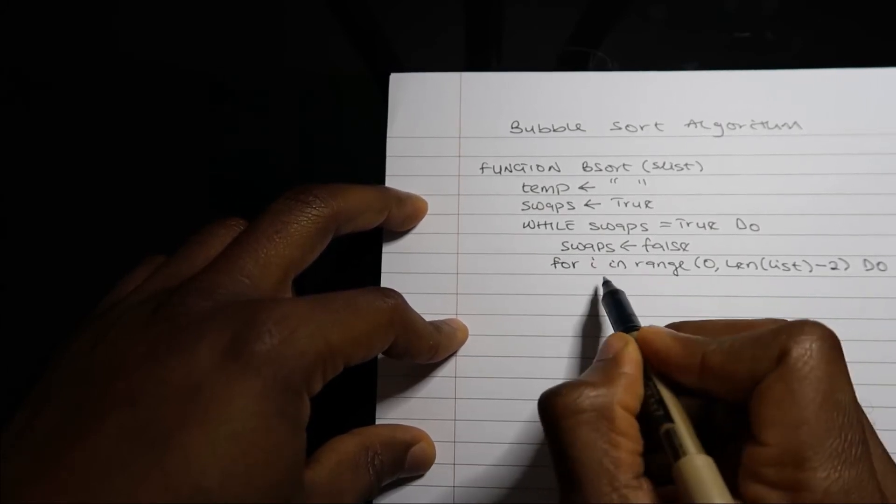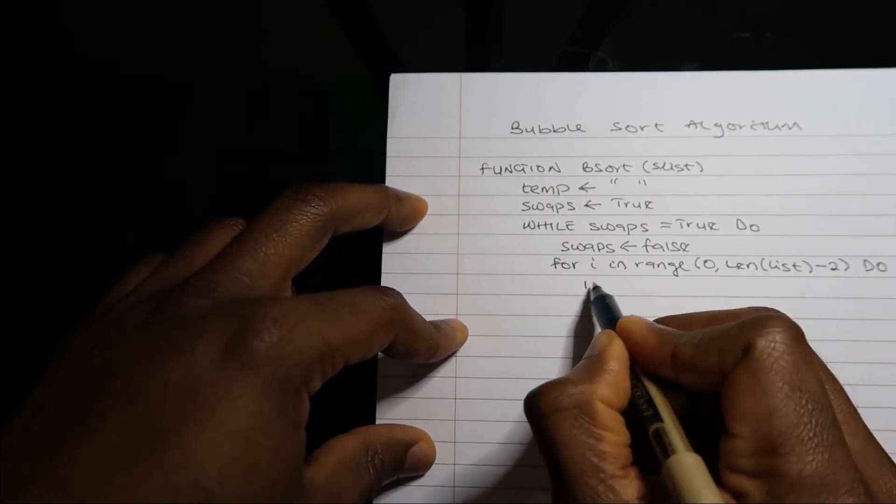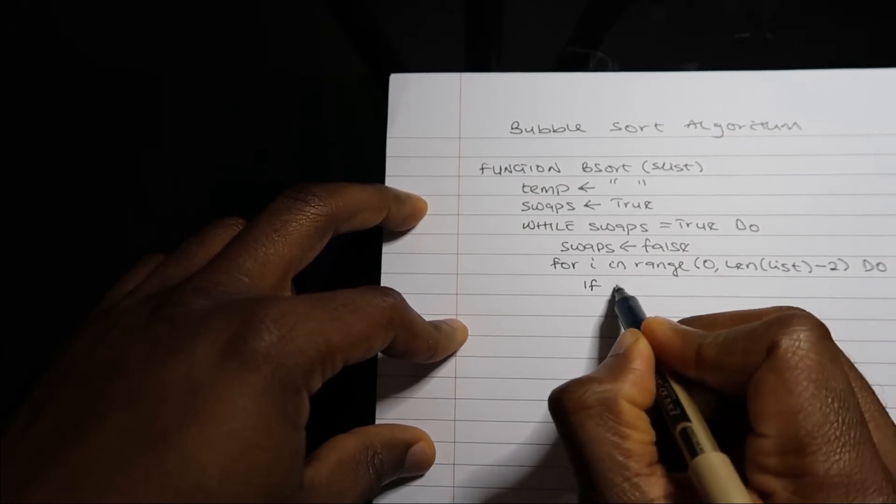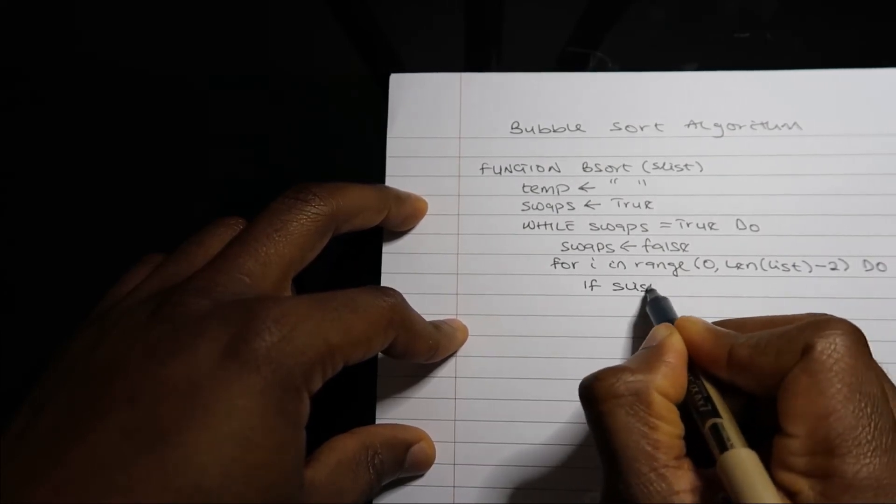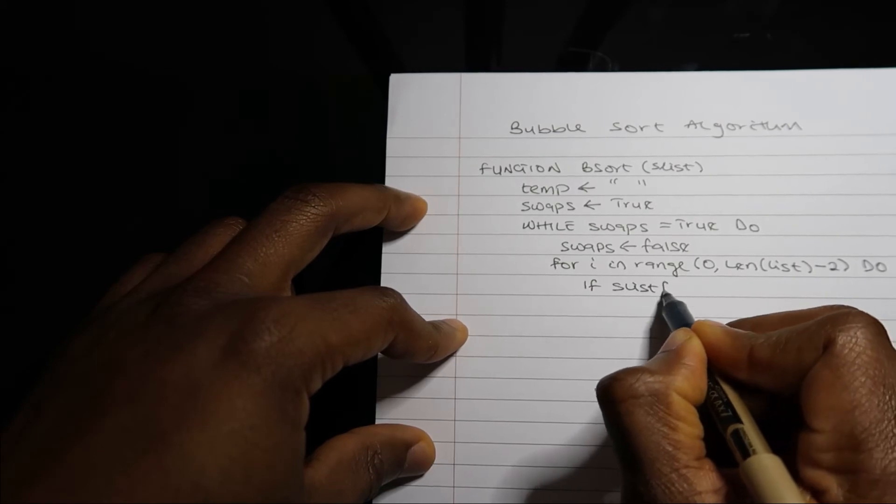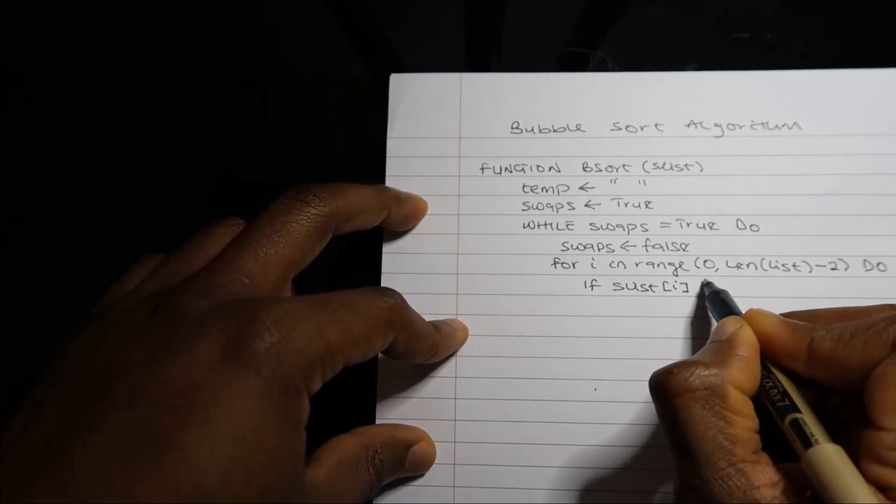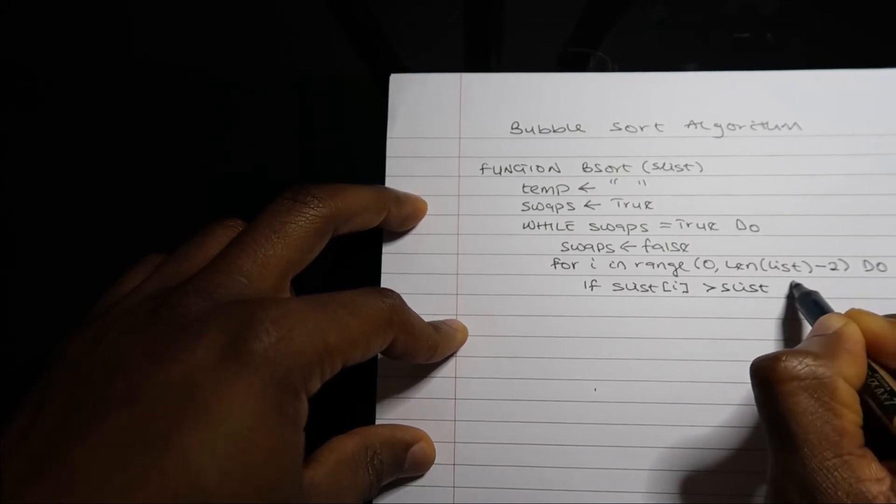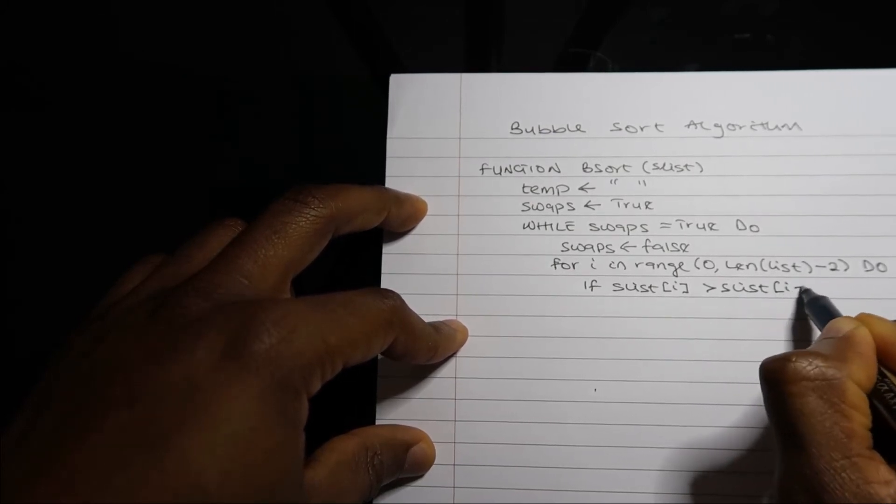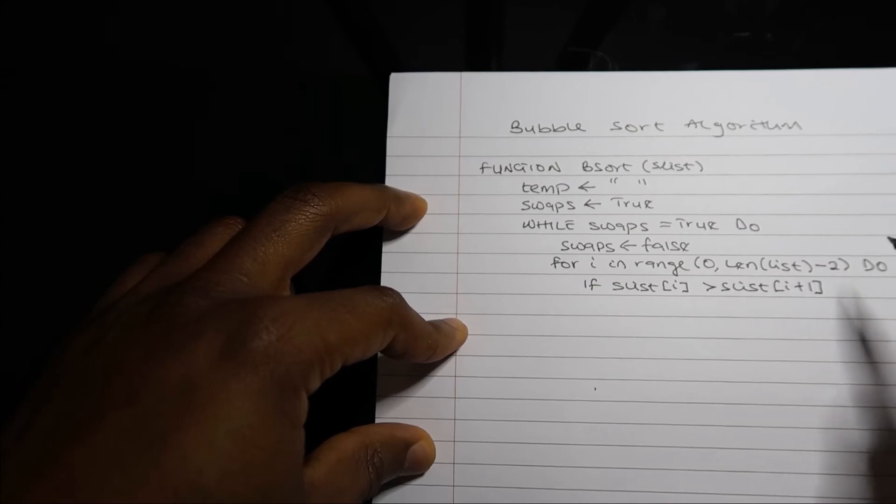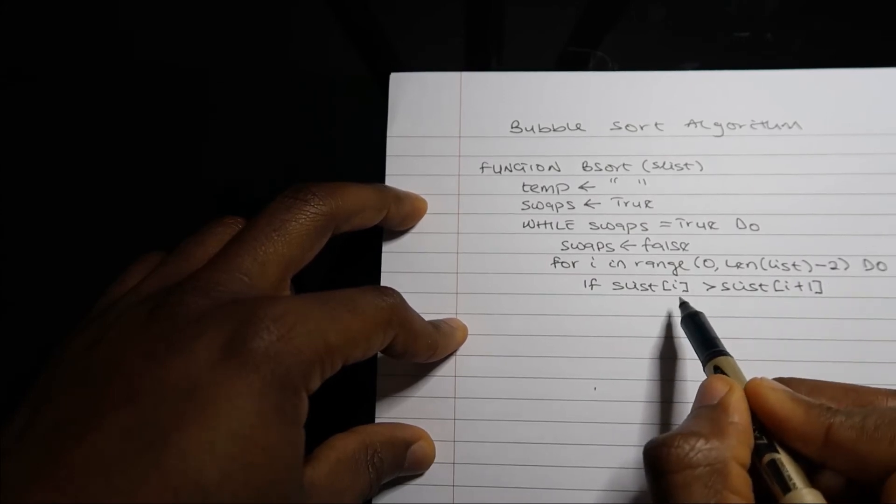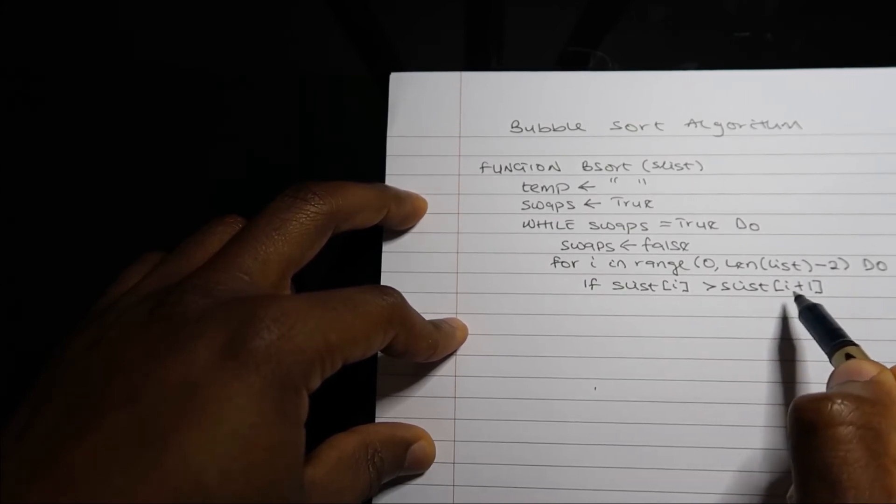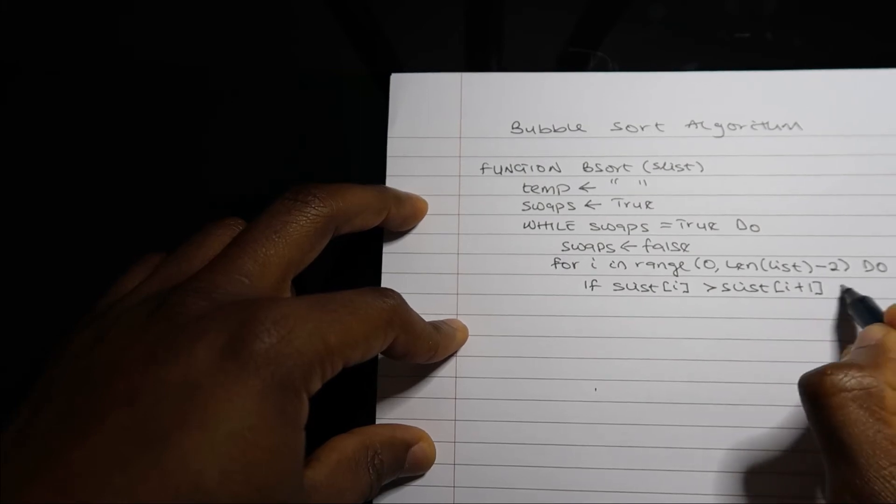So what I'm going to say is if slist[i] is greater than slist[i+1], technically what I'm saying is if the first value in my list is greater than the second value in my list, then...